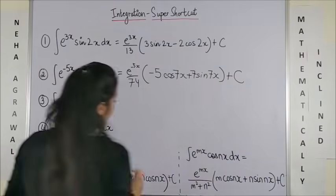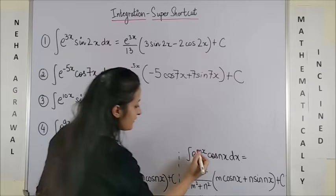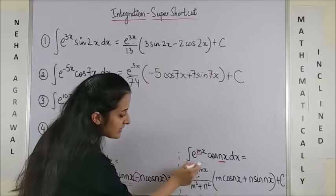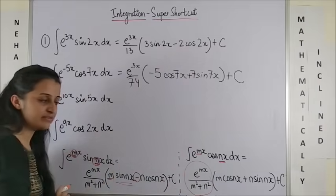And moving on the right side, then I have e to the power mx into cos nx. The initial part is absolutely the same as the previous formula.